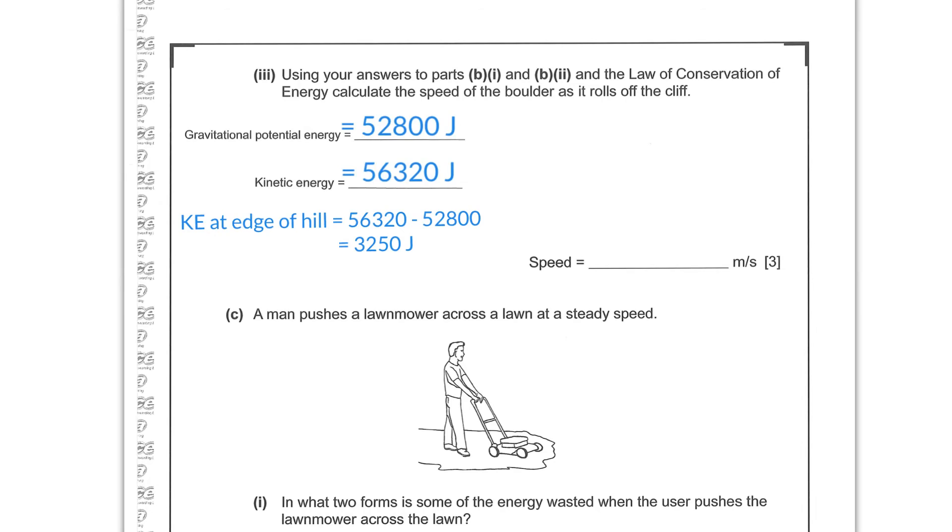So now we can use our kinetic energy equation to work backwards to a speed. So KE equals 1/2 mv squared. And if we rearrange that, v will equal the root of 2 times the kinetic energy. Because if you multiply both sides by 2, you get rid of the half and you get 2 times KE. If you divide by m, you get 2 times KE over m equals v squared. And if you take the root of that, you get the root of 2 times kinetic over m. So we get the root of 2 times 3,250 over 440, and that comes to 3.84 m/s.